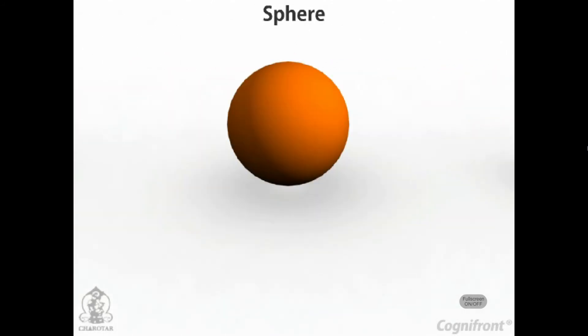Sphere: A sphere is a solid generated by the revolution of a semicircle about its diameter as the axis. The midpoint of the diameter is the center of the sphere. All points on the surface of the sphere are equidistant from its center.